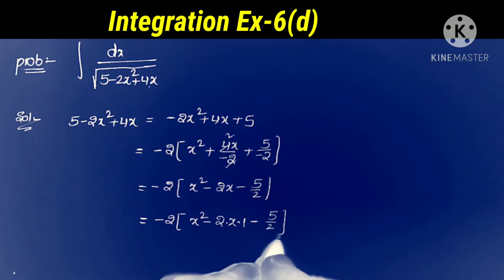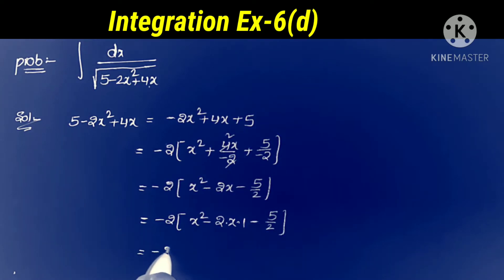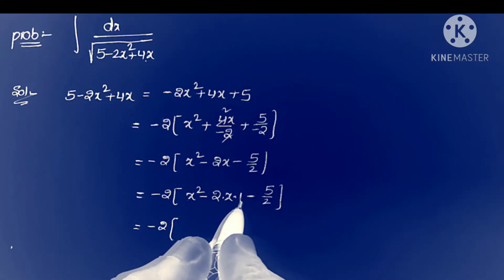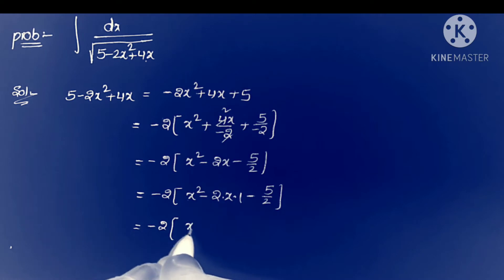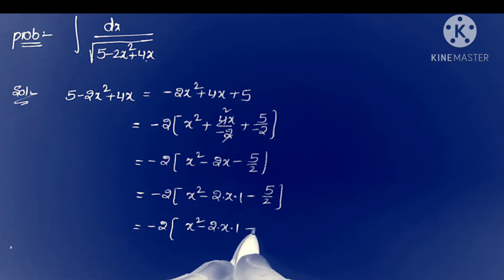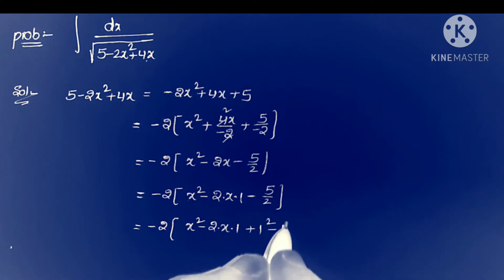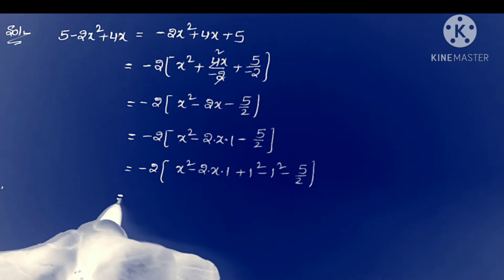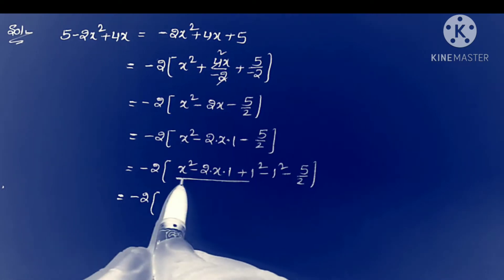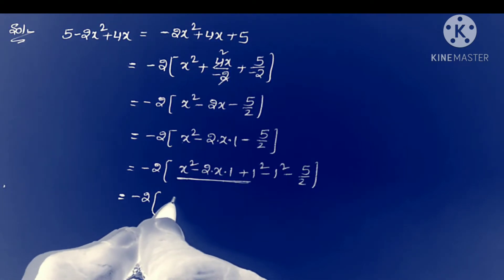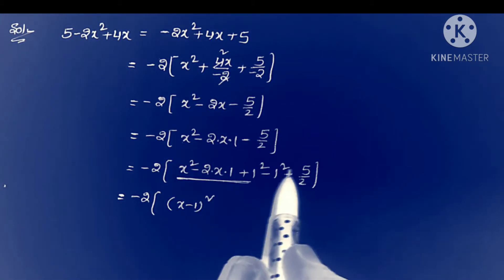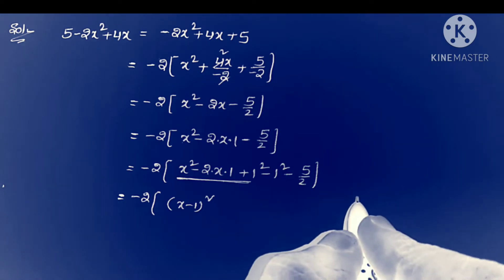This equals minus 2 into x squared minus 2 times x times 1 minus 5 by 2, which is in the form of a squared minus 2ab, where b equals 1. Adding b squared: x squared minus 2 times x times 1 plus 1 squared minus 1 squared minus 5 by 2. This is in the form a squared minus 2ab plus b squared, which is (a minus b) whole squared, that is (x minus 1) whole squared.